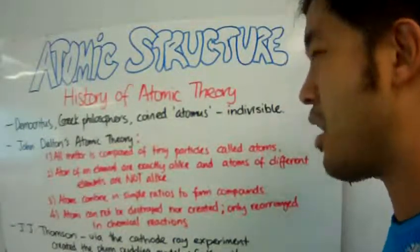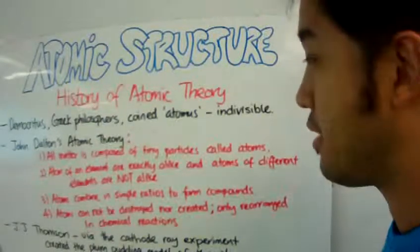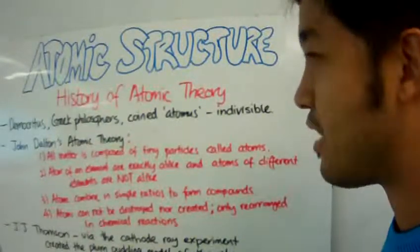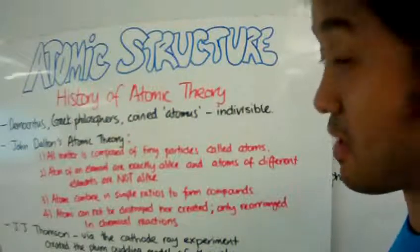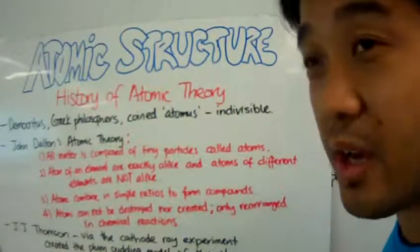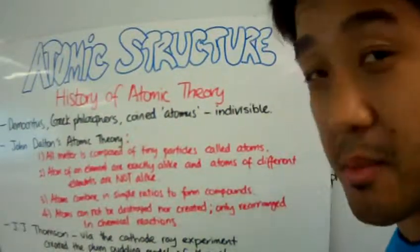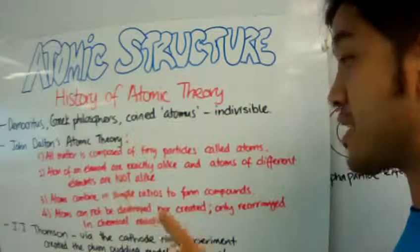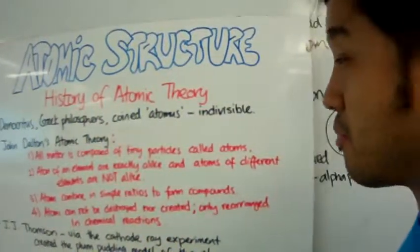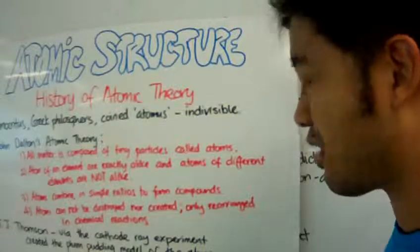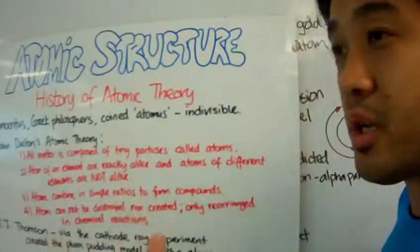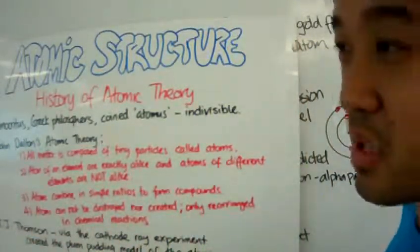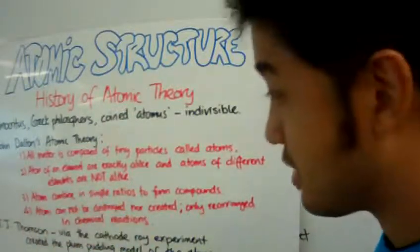And there came along this gentleman by the name of John Dalton. I guess he had free time and he began to postulate what atoms are. And this is his atomic theory. He said that all matter is composed of tiny particles called atoms. He didn't really make this up. He probably just took it from someone else.